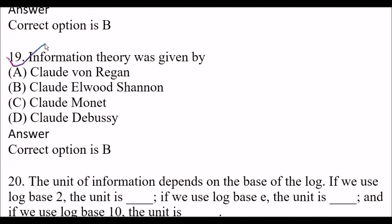Next question: Information theory was given by — Option A: Claude Born Regan. Option B: Claude Elwood Shannon. Option C: Claude Monet. Option D: Claude Devoshi. The right answer is option B, Claude Elwood Shannon. Information theory was given by Claude Elwood Shannon.